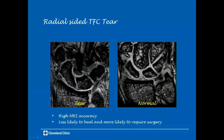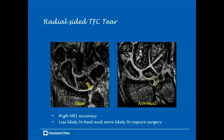Here's a case of a radial-sided tear of the triangular fibrocartilage, where high signal separates the normal low-signal fibers of the TFC. This should be distinguished from the normal high signal at the radial attachment, which is not a tear. Pay attention to the location when calling a radial-sided TFC tear to avoid overcalling the normal attachment. MRI has shown high accuracy for detecting TFC tears, and radial-sided tears are less likely to heal and more likely to require surgery.